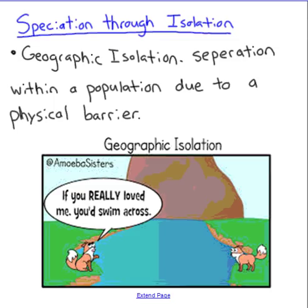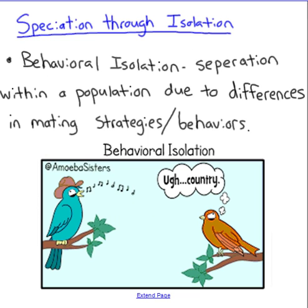The first way is geographic isolation: one population gets physically divided by a barrier — a river, a mountain range, or even a city — and the two sides can no longer interact or reproduce. The second way is behavioral isolation, where the behaviors and strategies of attracting mates diverge within a population. For example, if different groups develop different mating calls or preferences and those preferences differentiate, two new populations may form within the original population.